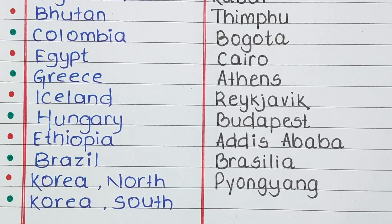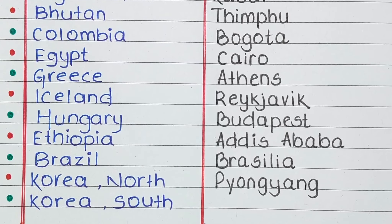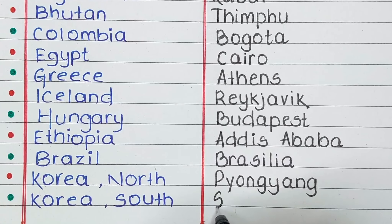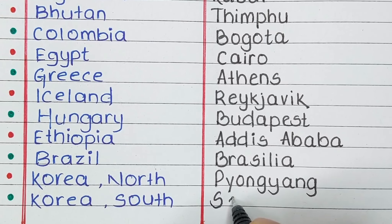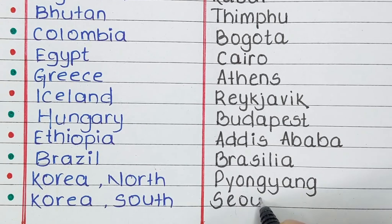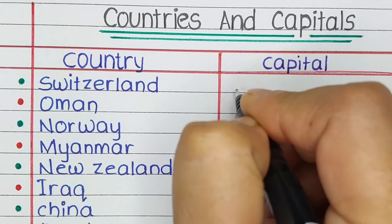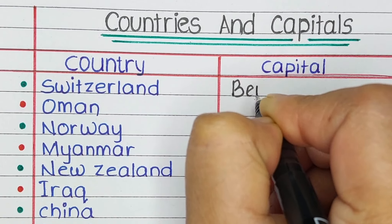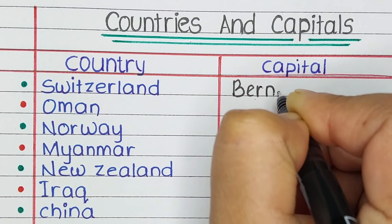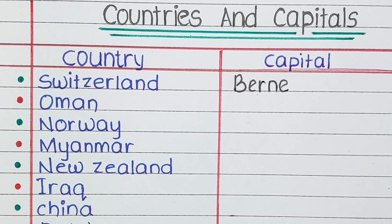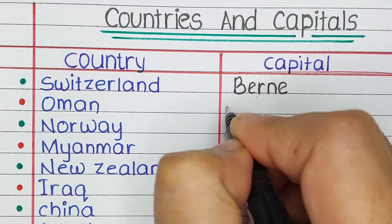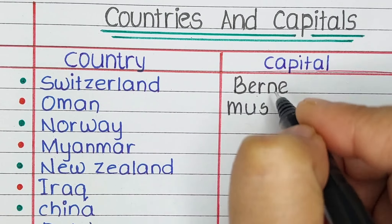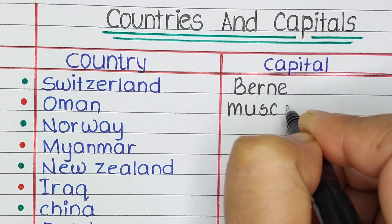Next is South Korea. The capital of South Korea is Seoul. Next country in our list is Switzerland. The capital of Switzerland is Bern.